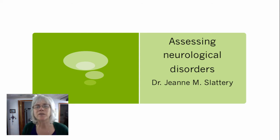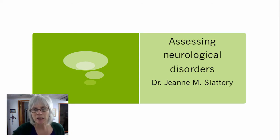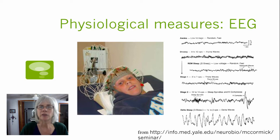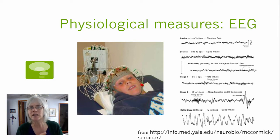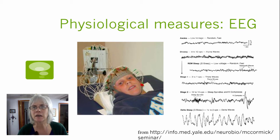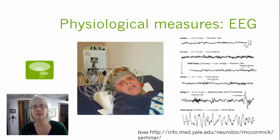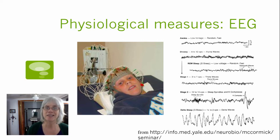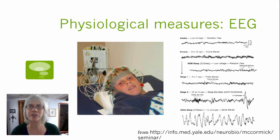Today we're going to talk about ways of assessing neurological disorders. Some of these are more medical in orientation, including taking EEGs. In this particular example, you see the ways that EEG patterns — electroencephalogram patterns — vary in different stages of sleep.